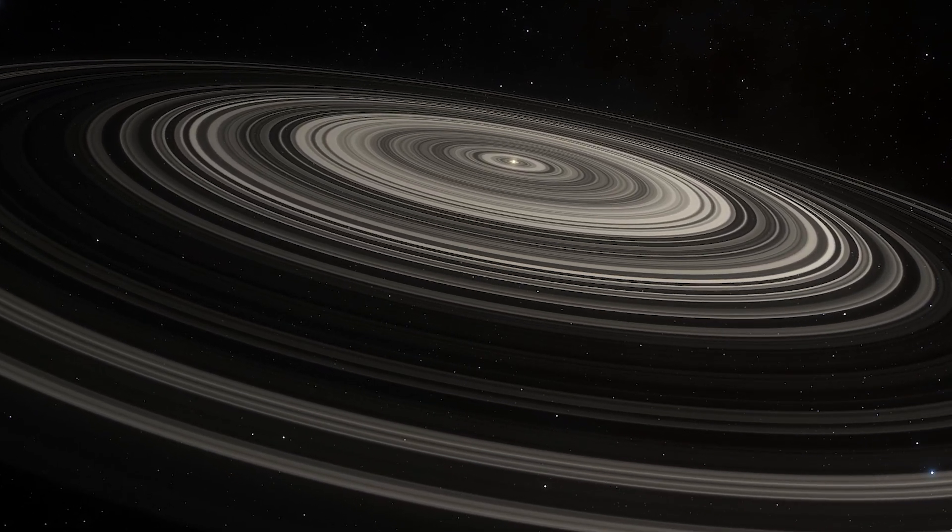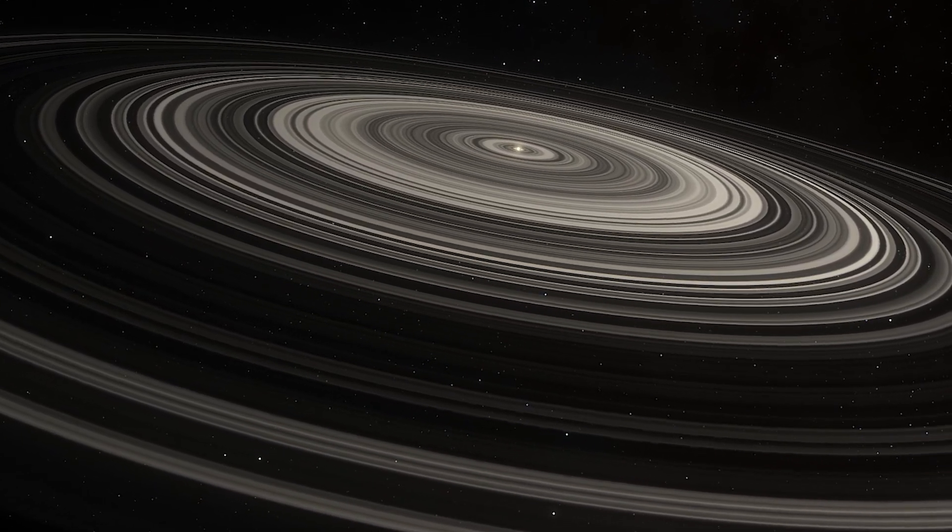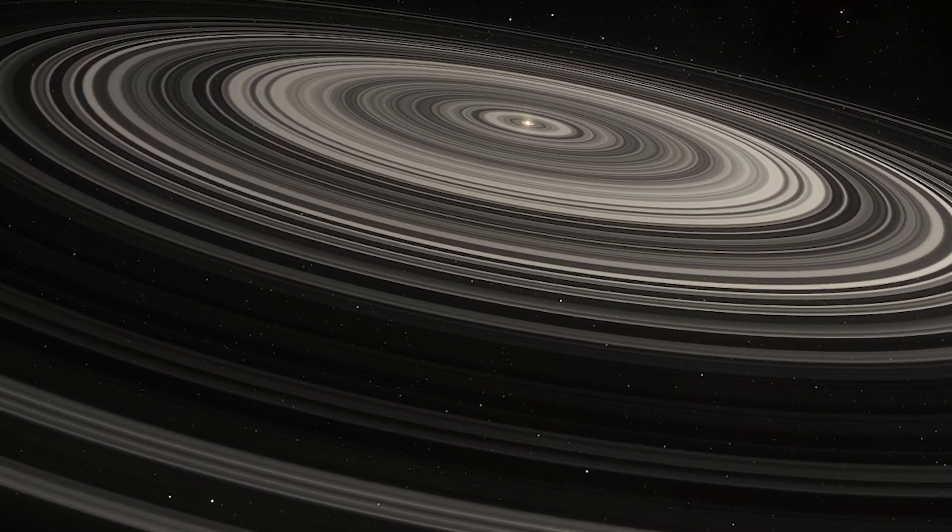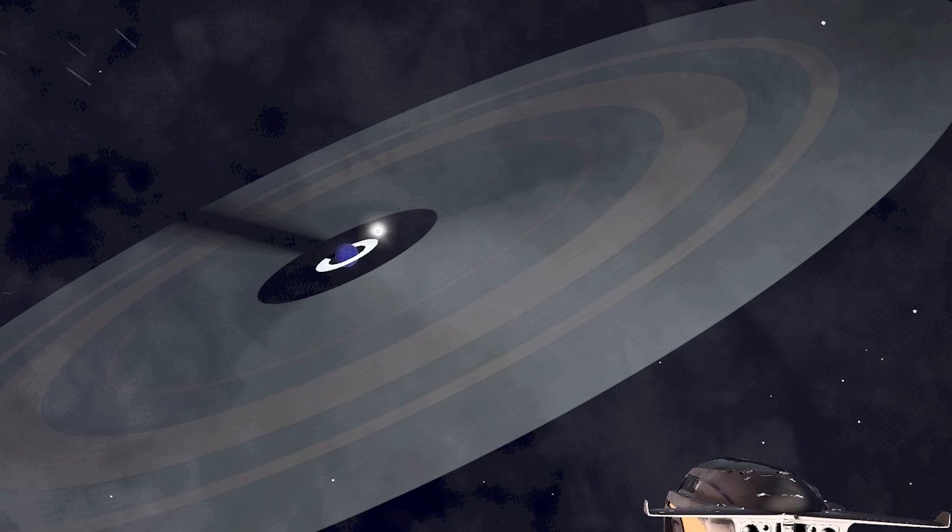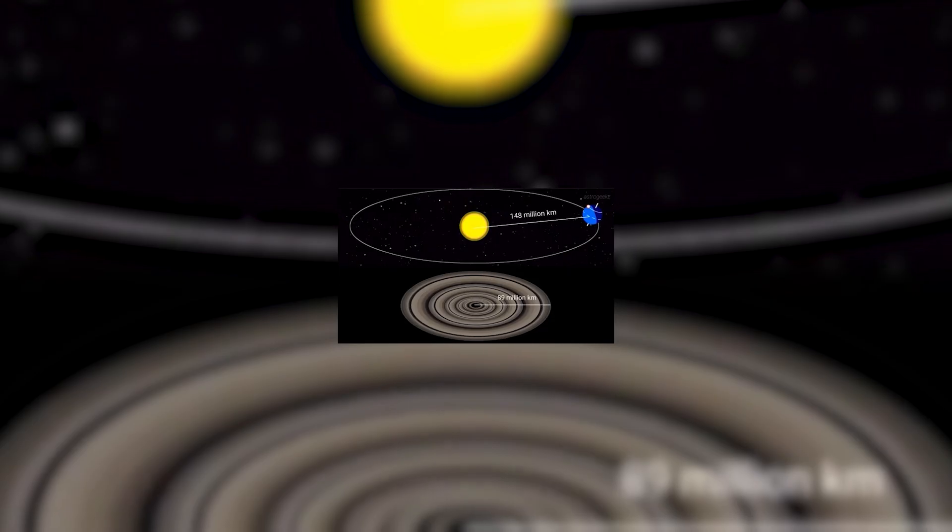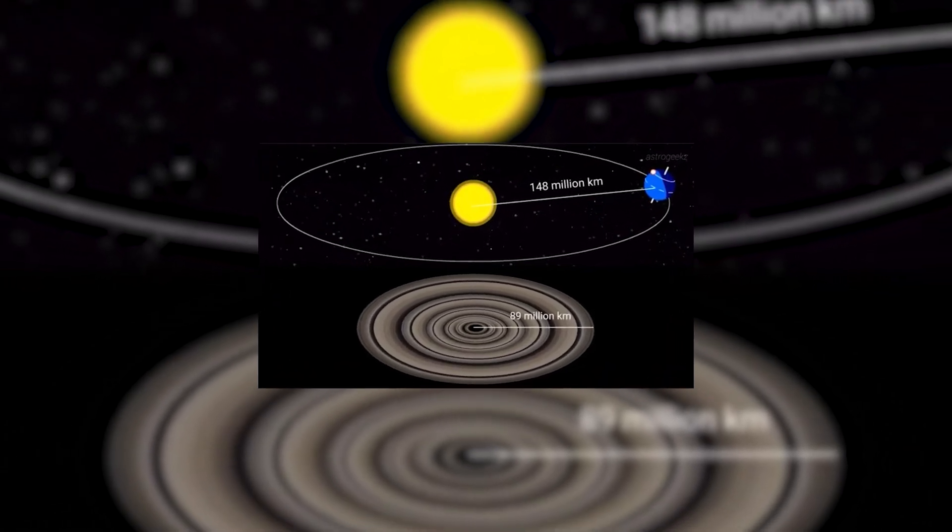J1407b, located about 434 light-years away, is a truly peculiar planet resembling a supersized Saturn. Astronomers have estimated its mass to be between 10 to 40 times that of Jupiter, making it significantly larger than any planet in our solar system.